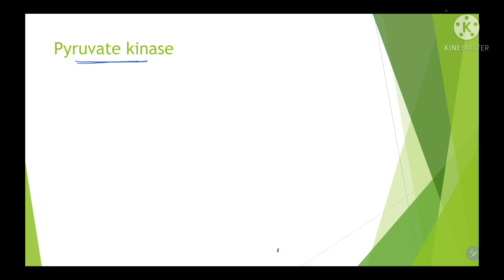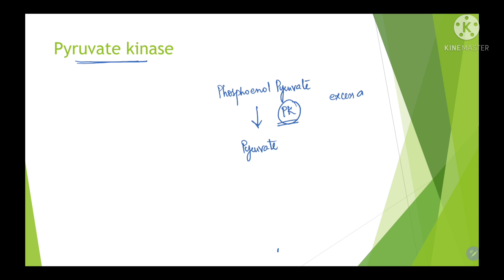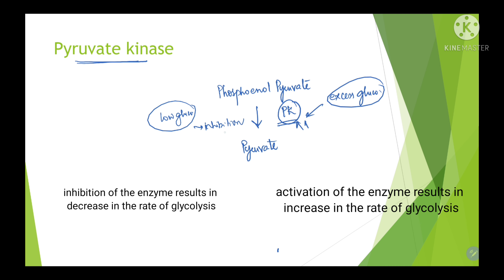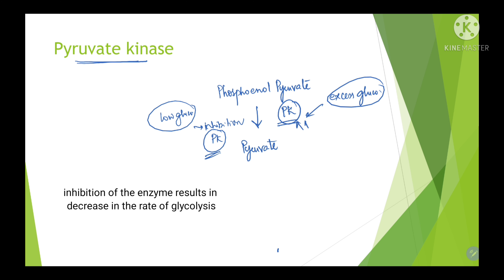Another important enzyme catalyzing an irreversible step in glycolysis is pyruvate kinase, which converts phosphoenolpyruvate into pyruvate. Whenever excess glucose is present, this enzyme is activated. Whenever there is low blood glucose concentration, there is inhibition of pyruvate kinase. This is how pyruvate kinase regulates the pathway.